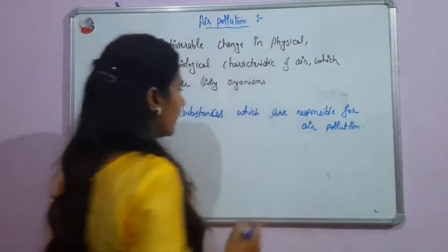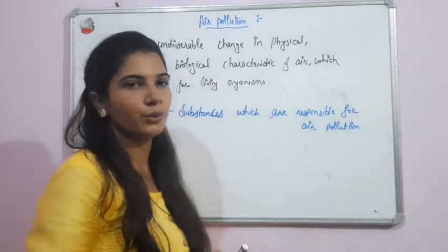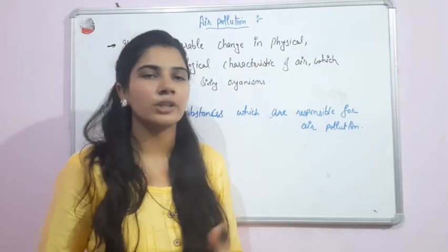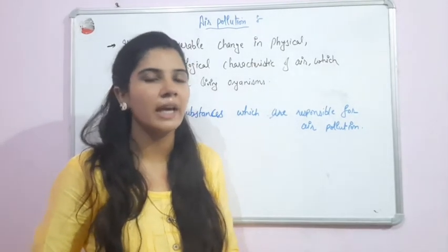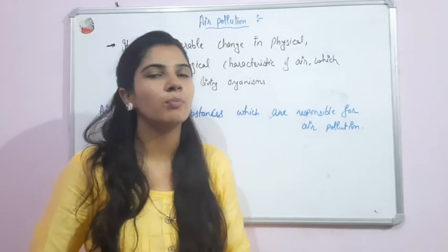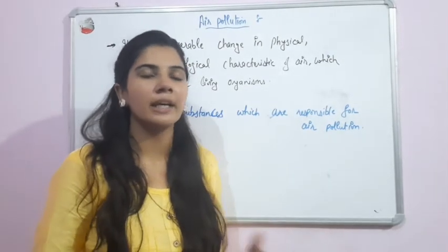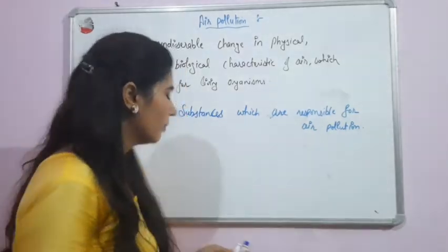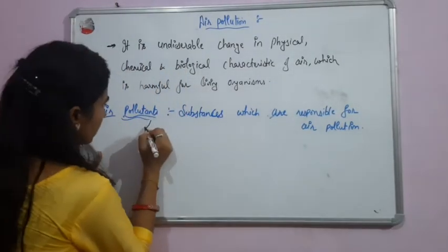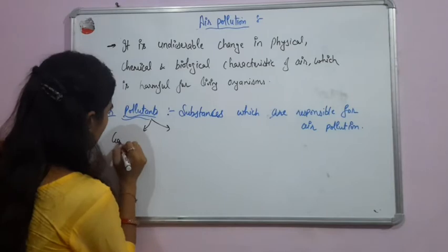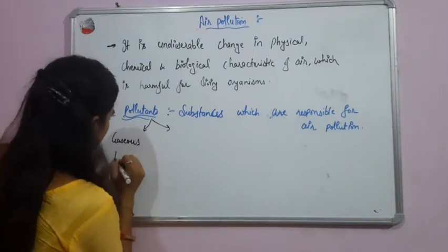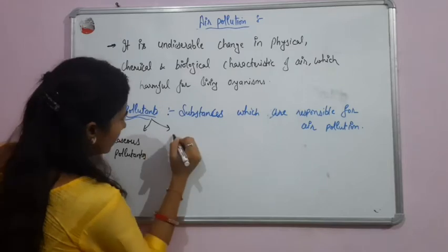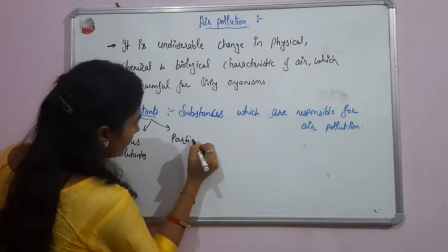If we talk about pollutants, these pollutants can be in gaseous form — some gases or particulate matter — which are responsible for air pollution. If we talk about different types of pollutants, these can be gaseous pollutants and these can be particulate matter.